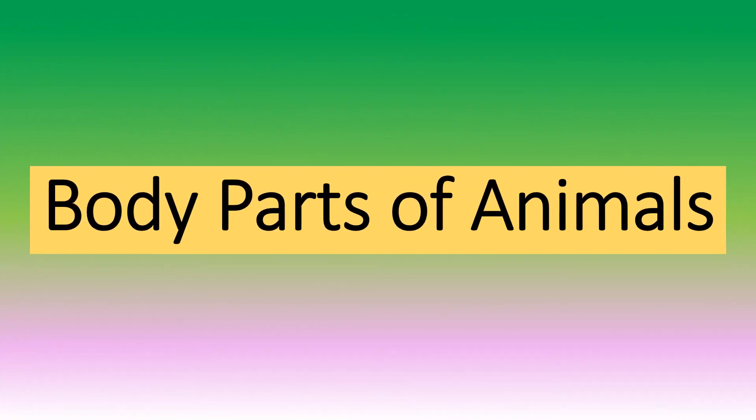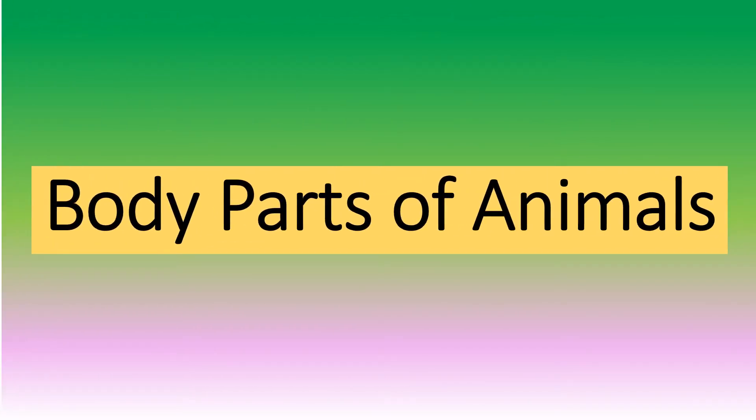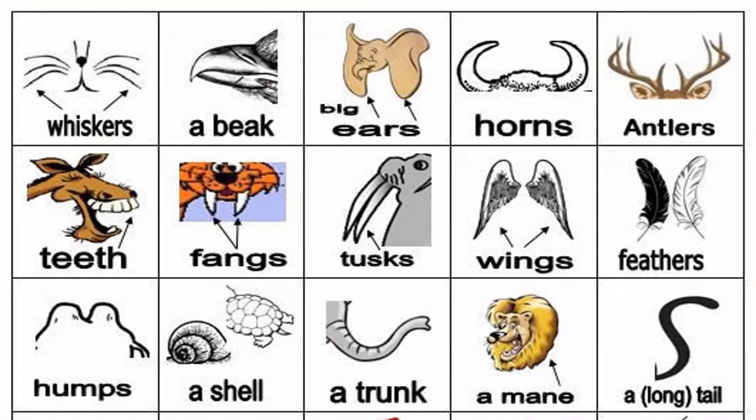Body parts of animals. Animals have different body parts. They can have whiskers, beak, big ears, horns, antlers, feathers, wings, tusks, fangs, teeth, humps, shell, trunk, mane, and a long tail.